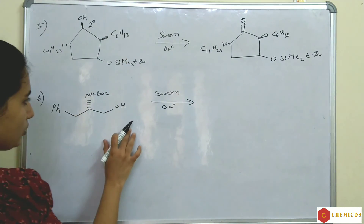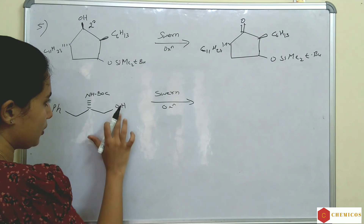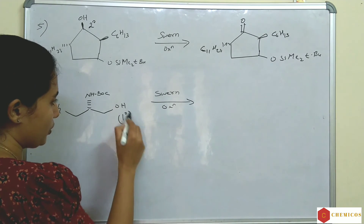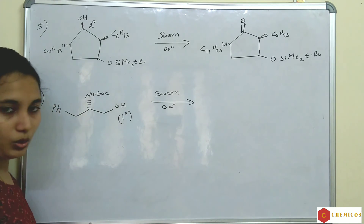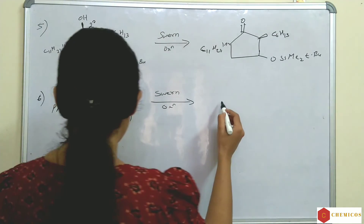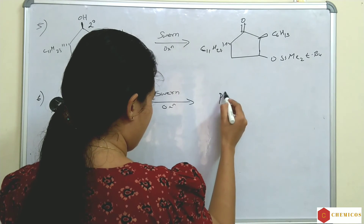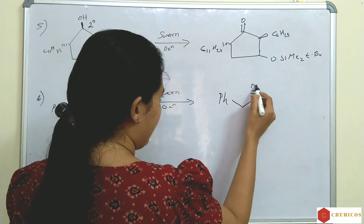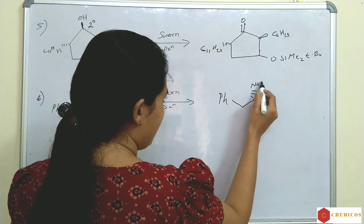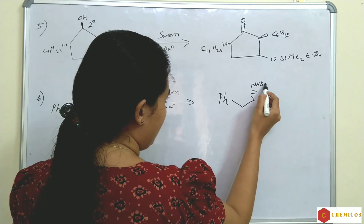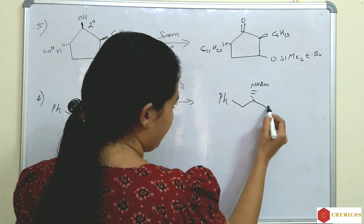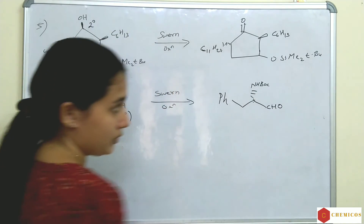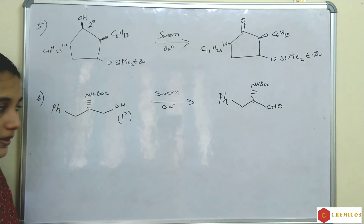Here also, this is a primary alcohol so it is converted to an aldehyde — giving an NHBOC-protected aldehyde. NHBOC is a protecting group. It is converted to the aldehyde product.